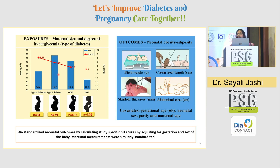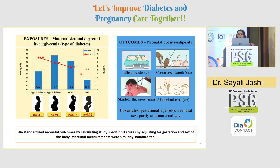The outcomes measured were birth weight, crown-heel length, ponderal index derived from these two measurements, skinfold thicknesses, and abdominal circumferences. Covariates included gestational age, neonatal sex, parity, and maternal age. We derived standard deviation scores by adjusting for appropriate covariates, and these were used in the analysis.